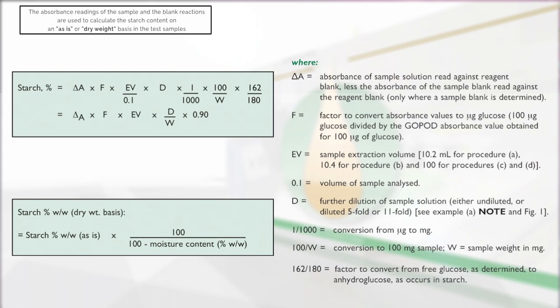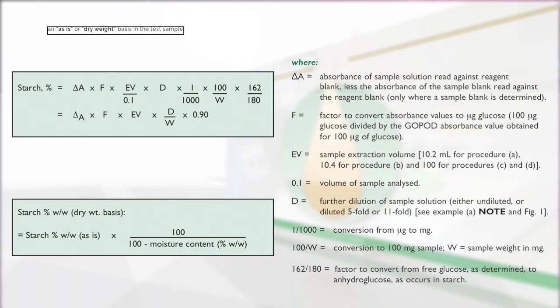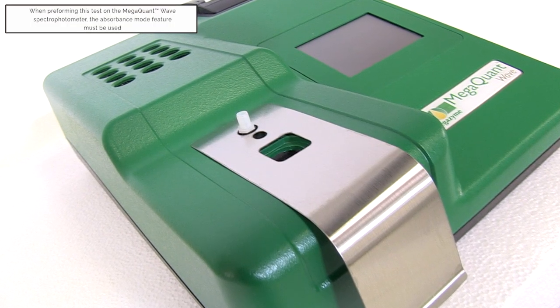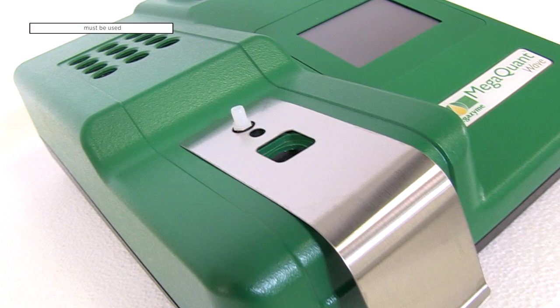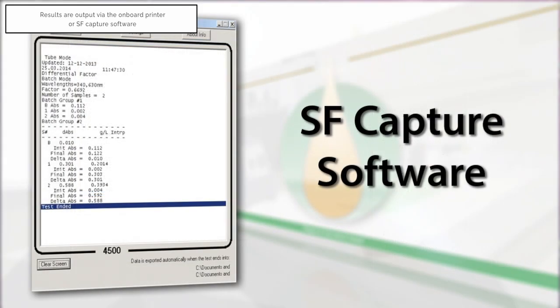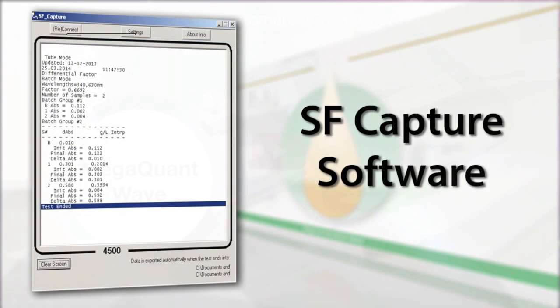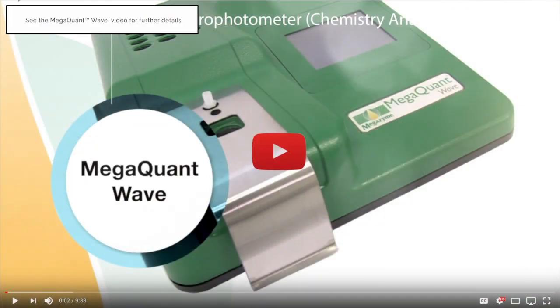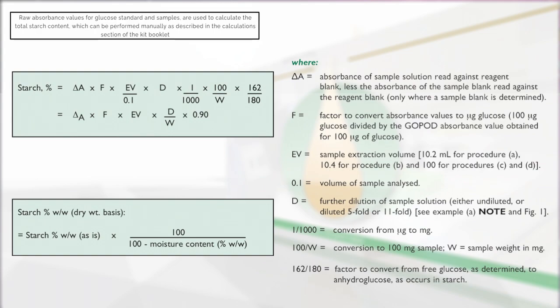The absorbance readings of the sample and the blank reactions are used to calculate the starch content on an as-is or dry weight basis in the test samples. When performing this test on the MegaQuant Wave spectrophotometer, the absorbance mode feature must be used. The results will be printed via the onboard printer or the data can be exported to a computer using the SF Capture software. In absorbance mode, the results output are raw absorbance values for glucose standard and samples. Therefore, the calculations of total starch content can be performed manually as described in the calculations section of the kit booklet.